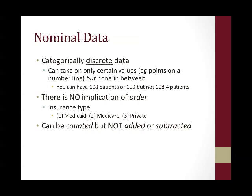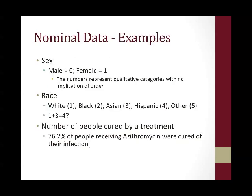Nominal data can be counted, but not added or subtracted. Examples include demographics like male or female — if you code male as 0 and female as 1, the numbers represent qualitative categories with no implication of order. Similarly, coding race as 1 for white, 2 for black, 3 for Asian, 4 for Hispanic, and 5 for other is nominal data — these are categories with no specific order and can't be added or subtracted meaningfully. For instance, if patient 1 is white and patient 3 is Asian, adding them and averaging gives you 4, which would correspond to Hispanic — and that really makes no sense in relation to statistical analyses.